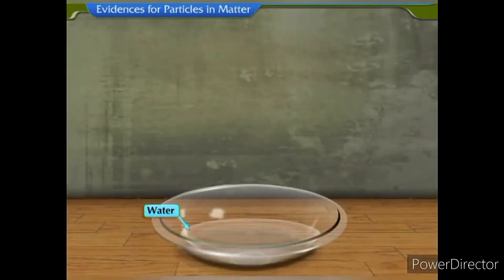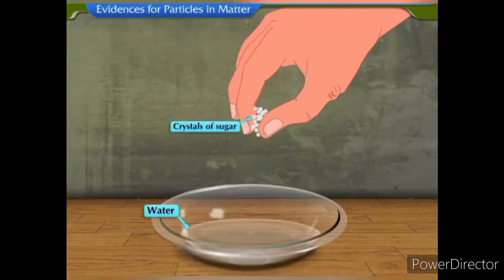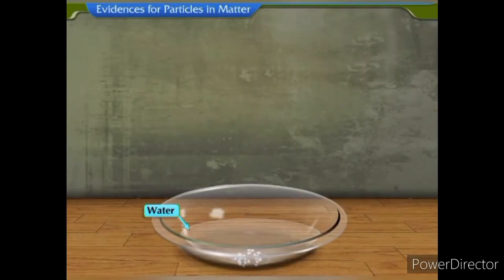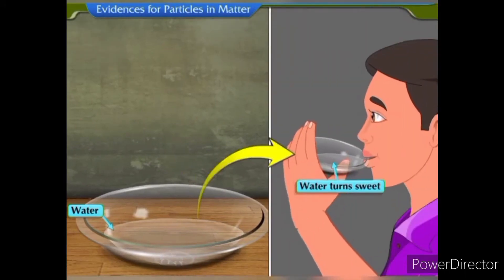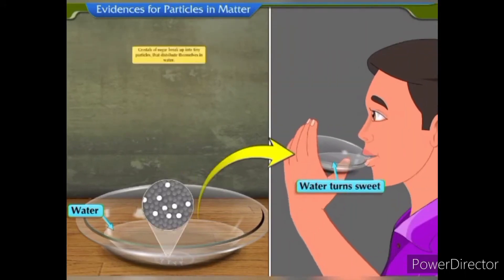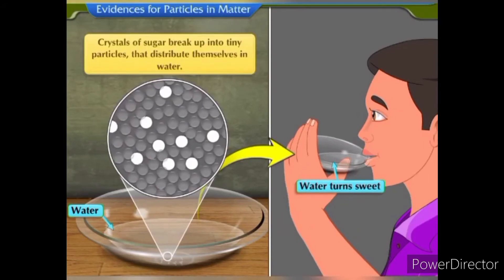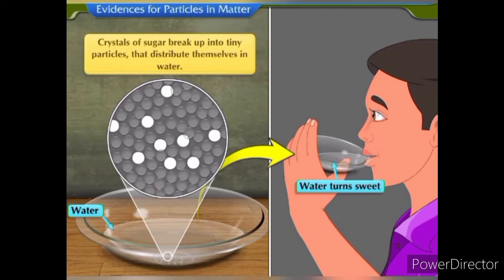Take water in a small bowl and dissolve a few crystals of sugar into it. The crystals of sugar break up into tiny particles that distribute themselves in water.